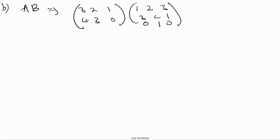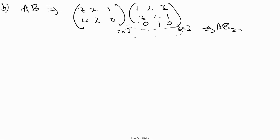We have a 2 by 3 matrix and a 3 by 3 matrix. When multiplying these, the number of columns of the first matrix must equal the number of rows of the second — and that condition is satisfied here. The resultant matrix A times B is therefore going to be a 2 by 3 matrix.